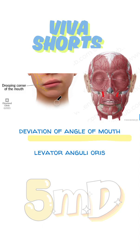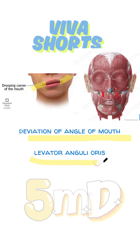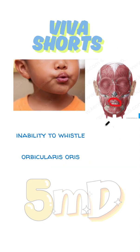Deviation in the angle of the mouth: if the patient smiles, the corner of the mouth will pull to one side. In the normal closed state, you have deviation of the corner of the mouth on the affected side downwards. This is due to levator anguli oris paralysis on the affected side.